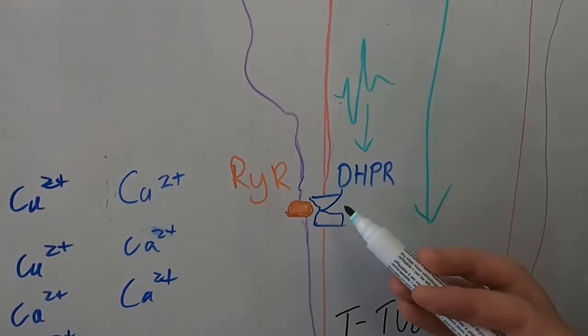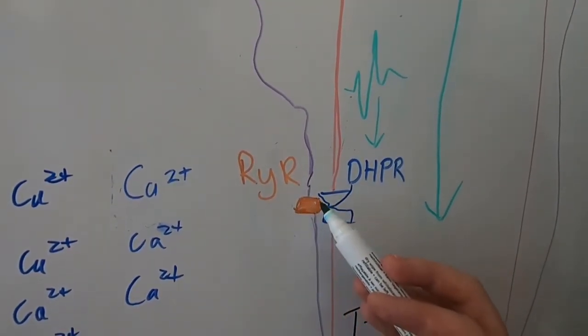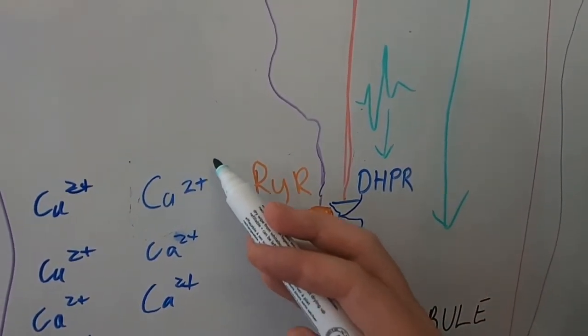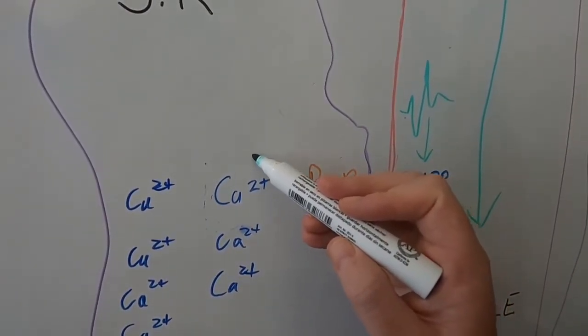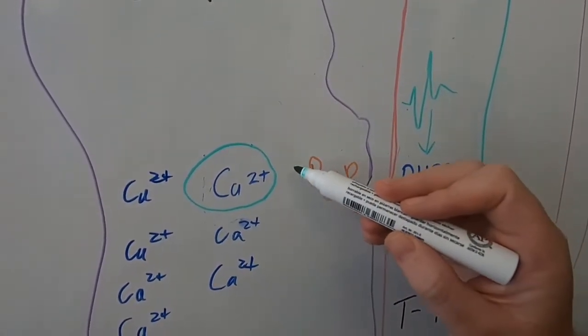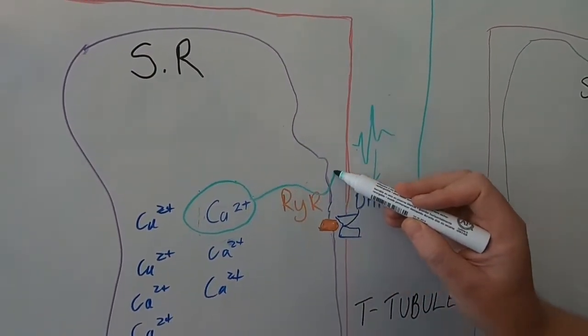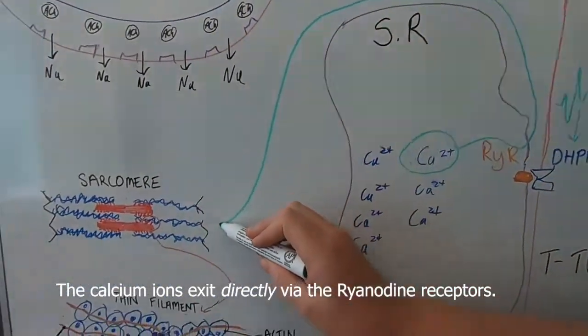In its activated state, it'll interact with the ryanodine receptor on the sarcoplasmic reticulum. When these two combine, what that ends up causing is the release of calcium from the sarcoplasmic reticulum. So now this calcium is going to leave the sarcoplasmic reticulum thanks to these ryanodine receptors and go to the sarcomere.